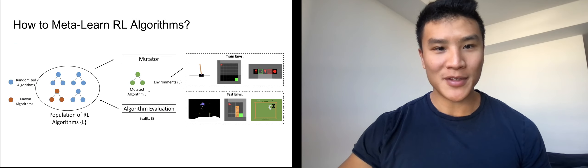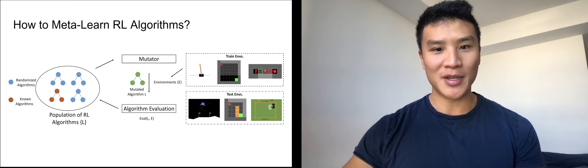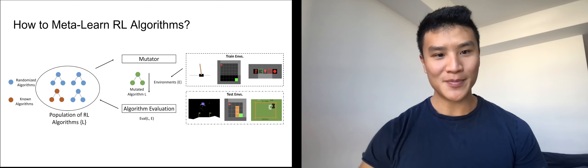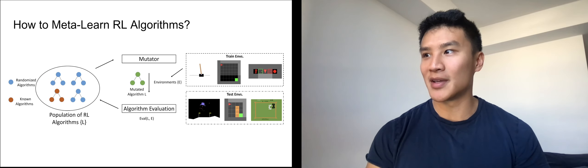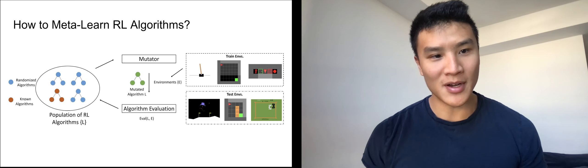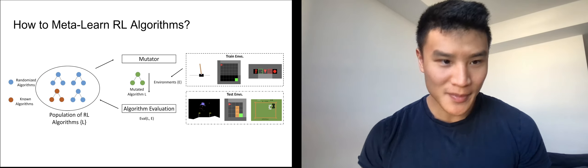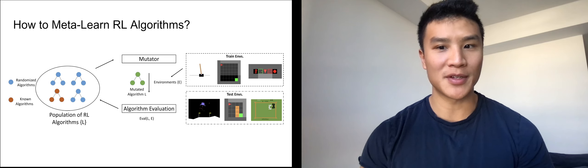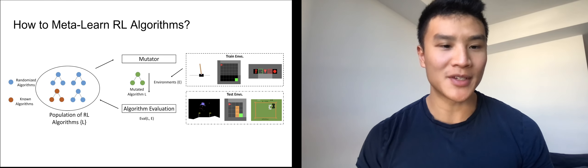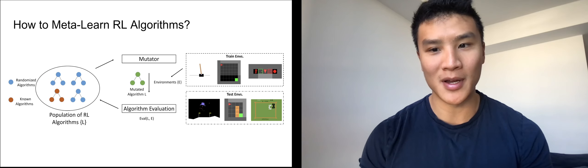Now that we have this language, how can we optimize over the space to learn new algorithms? We take an evolutionary-based approach where we first initialize a population of RL algorithms randomly, and a subset of this population can also be initialized with known existing algorithms to help the search process.